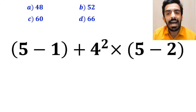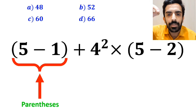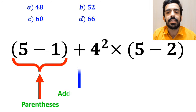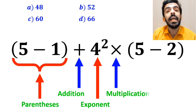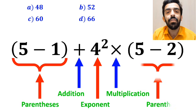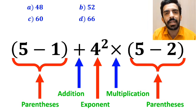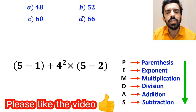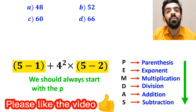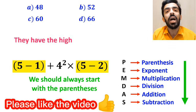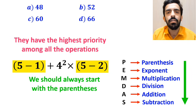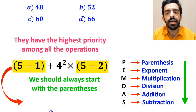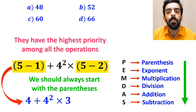As you can see in the image, in this expression we first have parenthesis, then an addition sign, followed by an exponent, then a multiplication sign, and finally another parenthesis. According to the PEMDAS rule, we should always start with the parenthesis since they have the highest priority. So, instead of the original expression, we rewrite it as 4 plus 4 squared multiplied by 3.